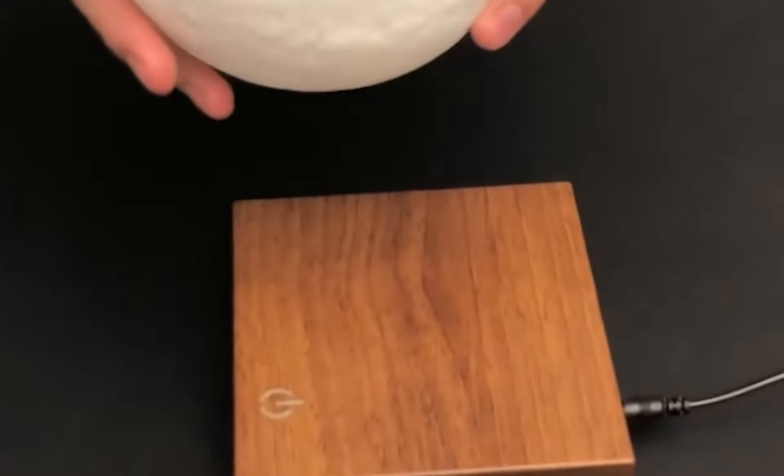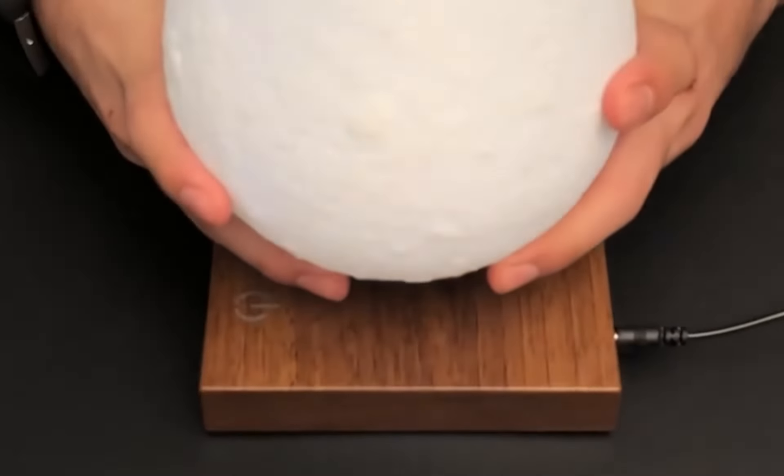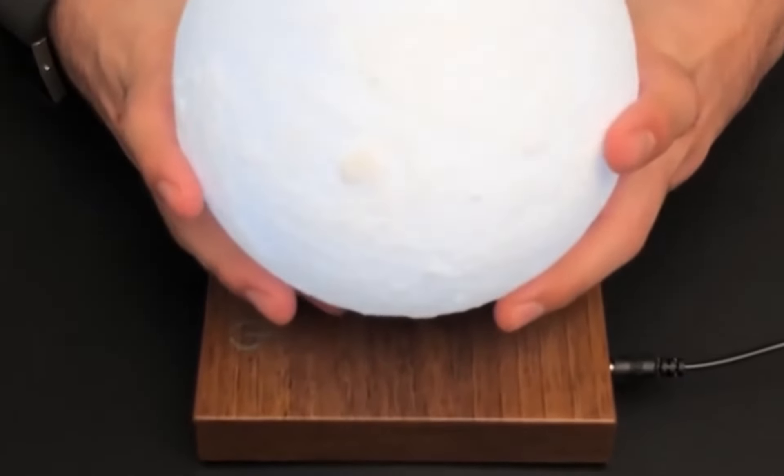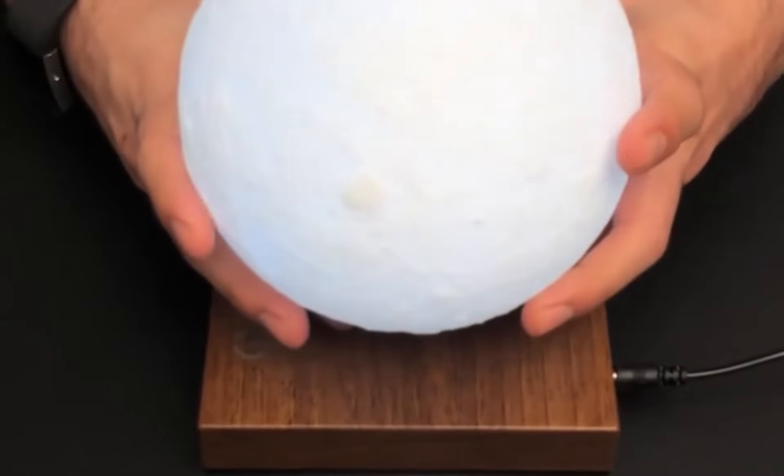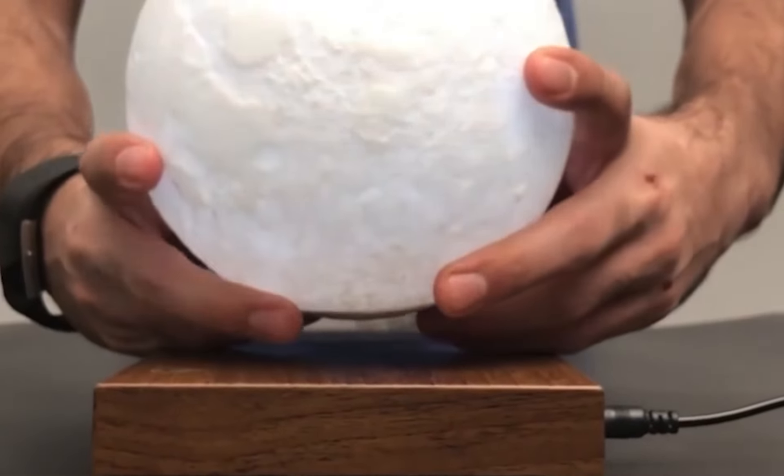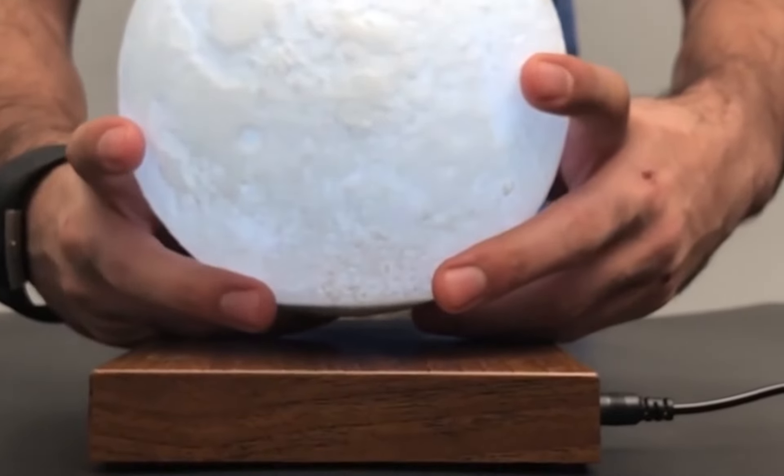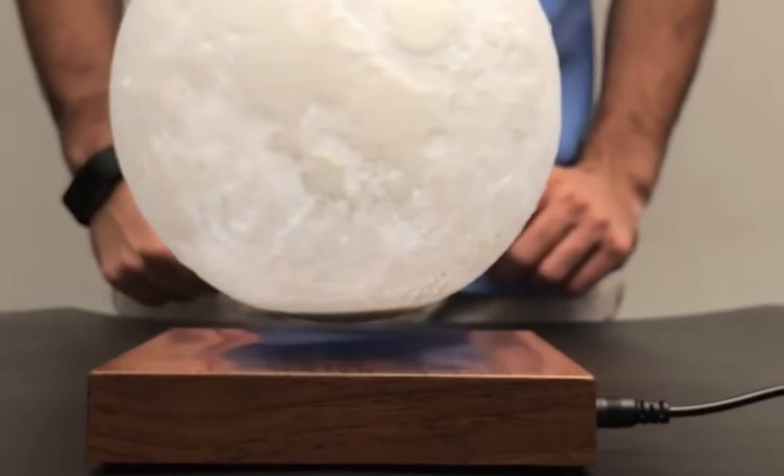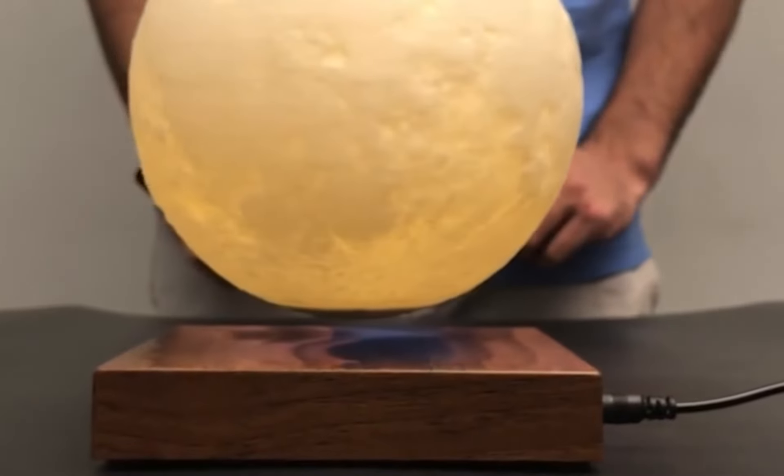The manufacturer reproduced the moon's surface by using 3D printing technology and created a texture very similar to the original. The base must be connected to the wall charger through an adapter but the lamp is powered through electromagnetic induction so it doesn't need cables or a built-in battery.